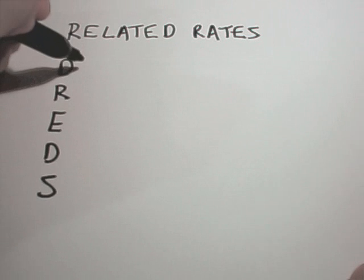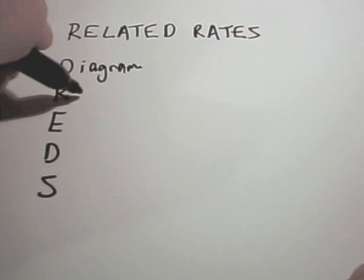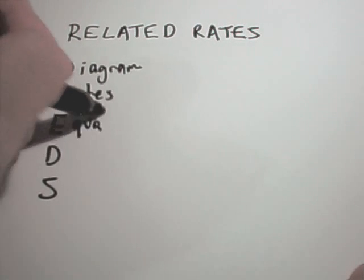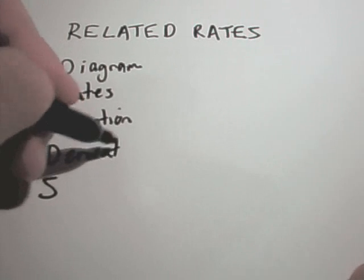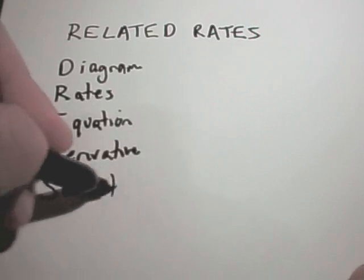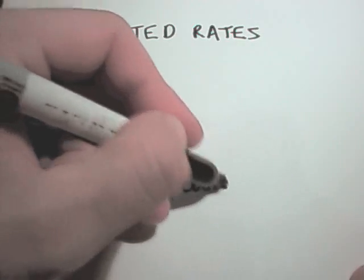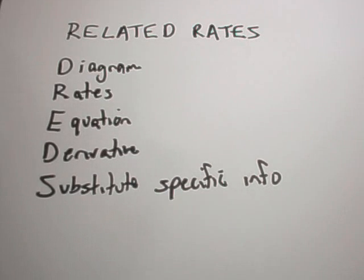And what DREDS stands for is come up with a diagram, label your rates, find an equation, then you take a derivative, and only after that do you substitute specific information. Okay, so I'm going to use that on this problem as well.